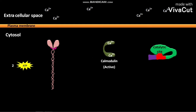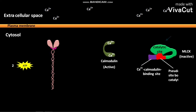The cytosol of the cell also contains myosin light chain kinase, or MLCK, in its inactive state. The MLCK has a catalytic site, a calcium-calmodulin complex binding site, and a pseudosubstrate site bound to the catalytic site.